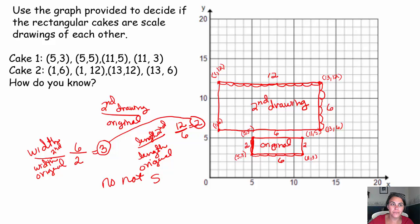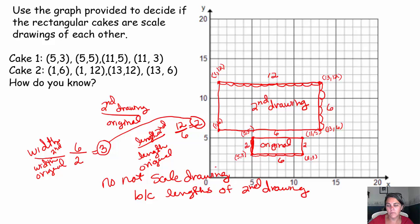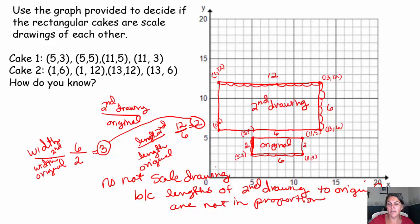These are not scale drawings because the lengths of the second drawing to the original are not in proportion. If they were proportional — see how you have 2 times 3 is 6 — you'd have to do your length of 6 times 3 is 18. If it was going to be proportional, the new cake pan would have to be 18 by 6. So this is definitely not proportional and not a scale drawing of one another.